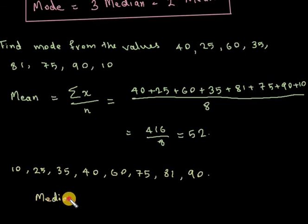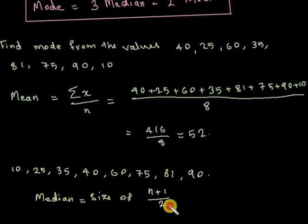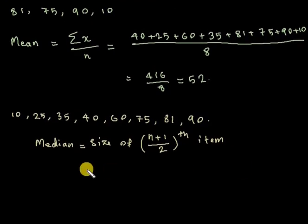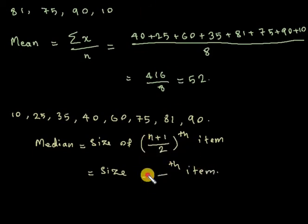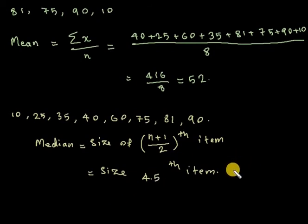Median equals the size of the n plus 1 by 2 th item. That gives us 9 by 2, which is 4.5. So we take the average of the 4th and 5th items.